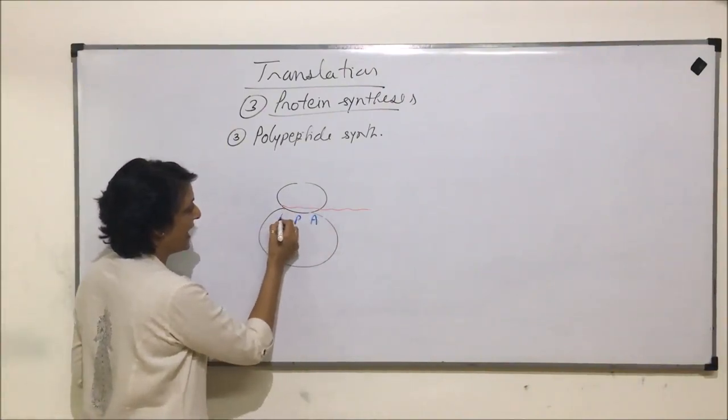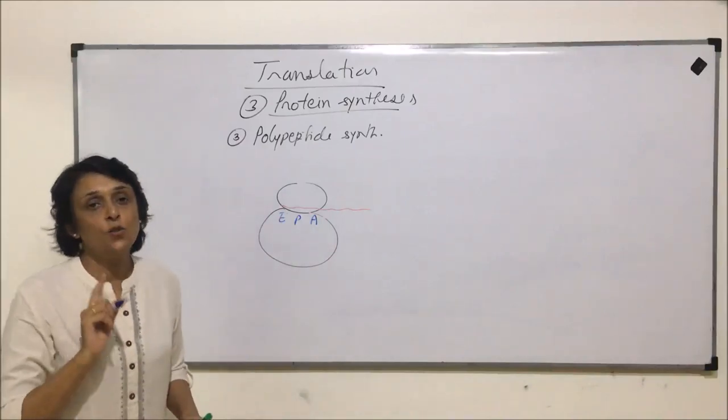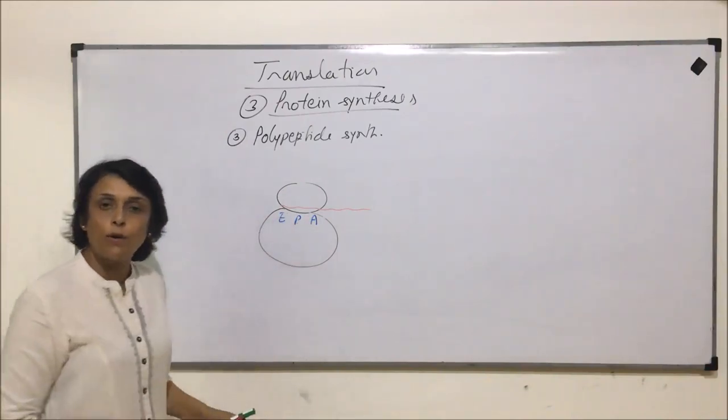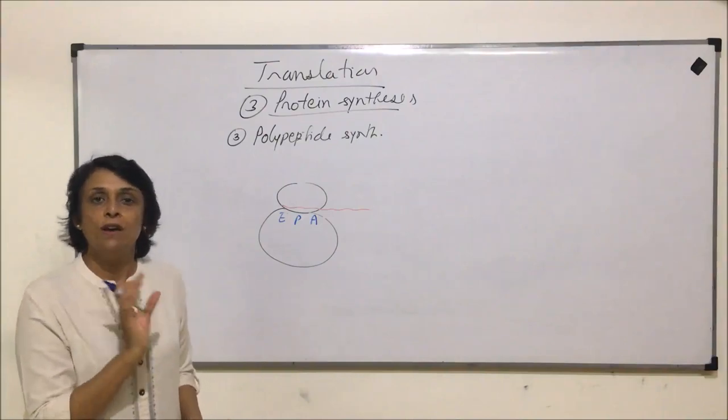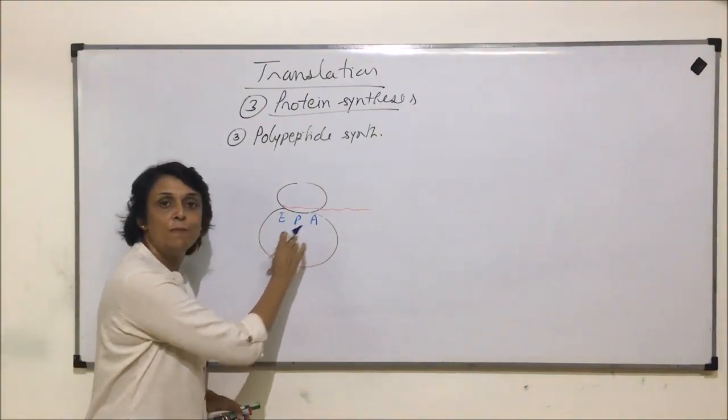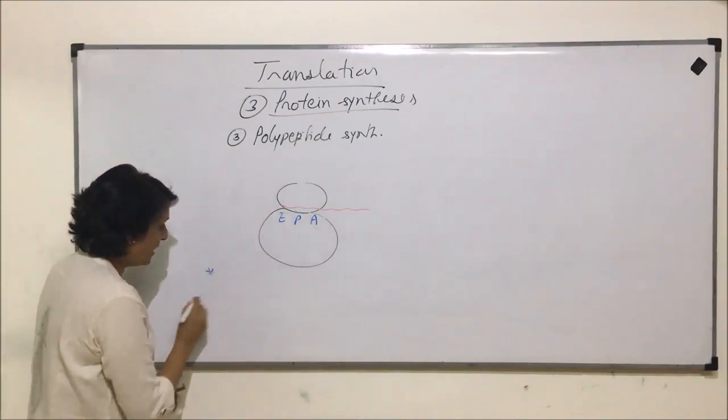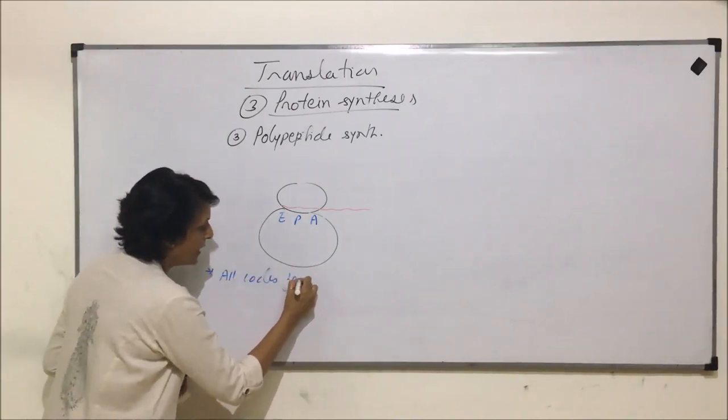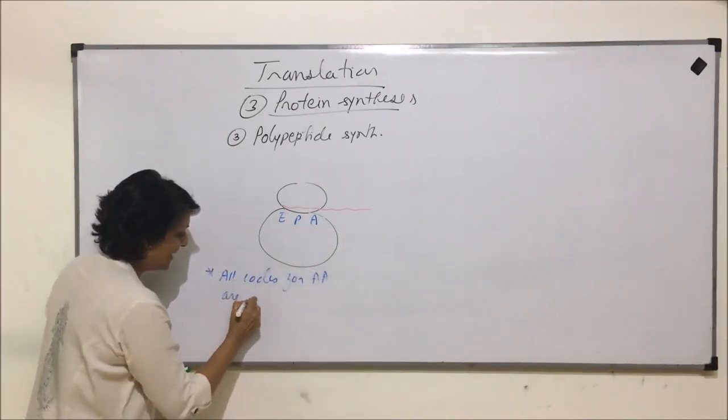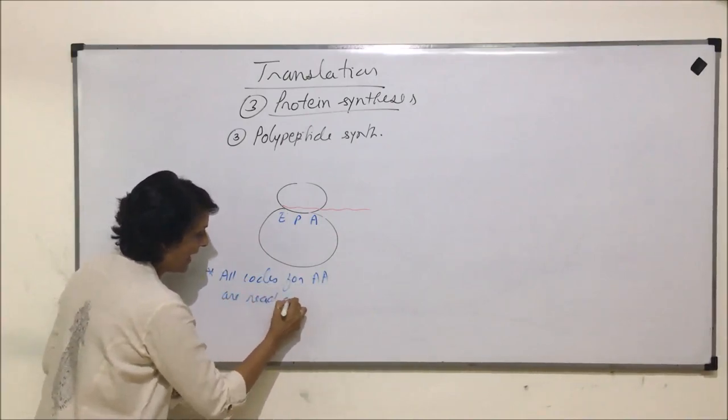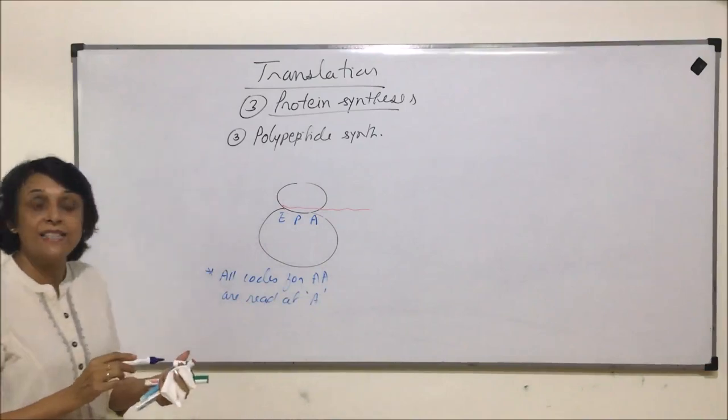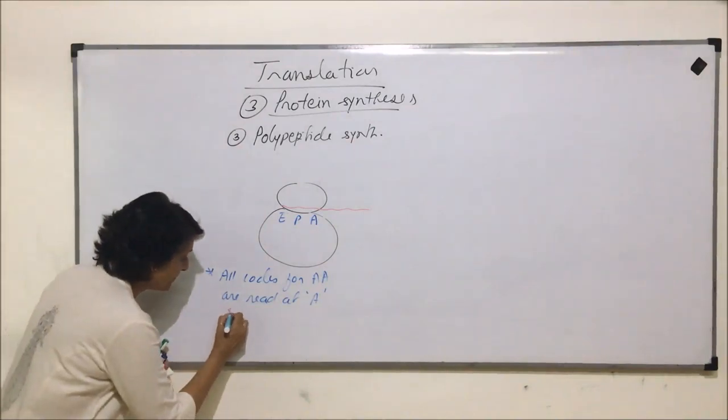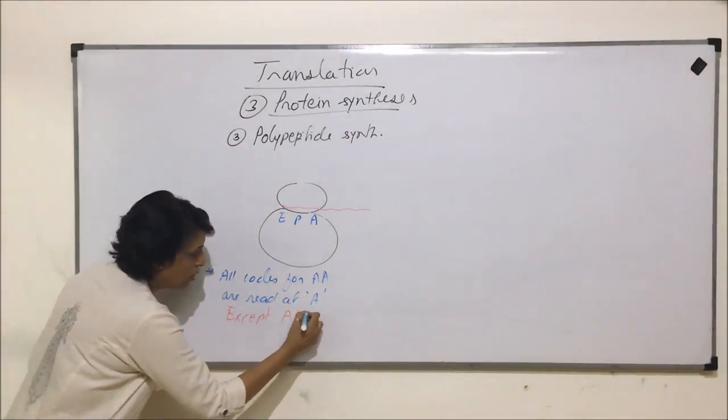This is A site, P site and E site. First code that is AUG always comes at site P, or we can say this is the only first code which can come here. All other codes will be read from site A. That means all codes for amino acid are read at site A except AUG, because this is the start codon.